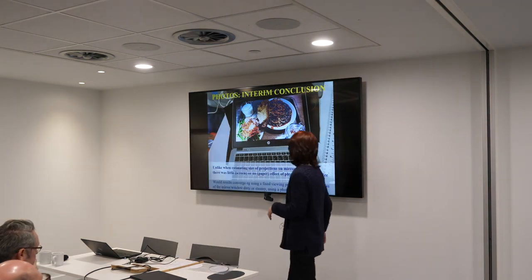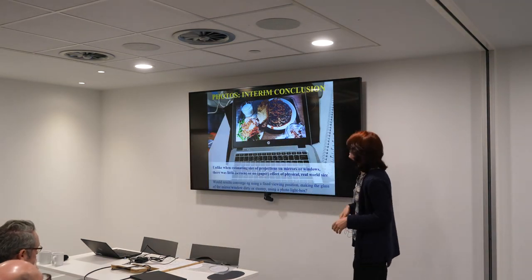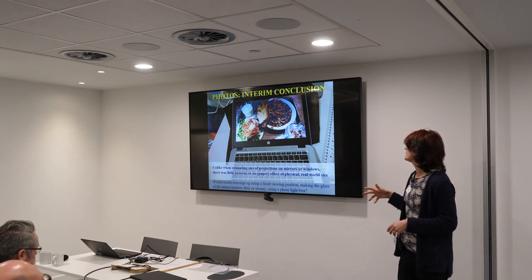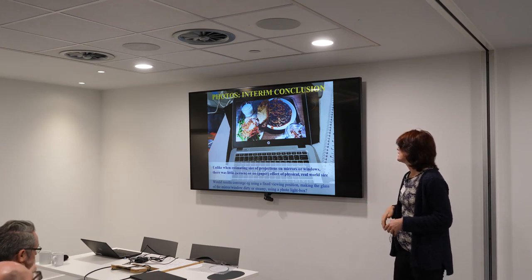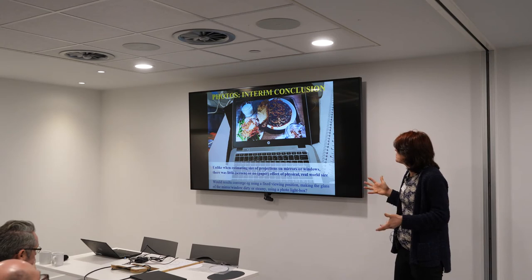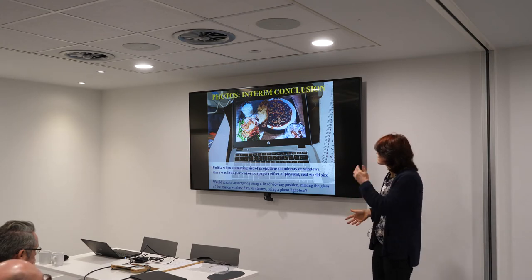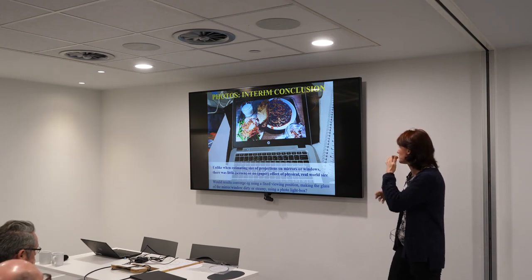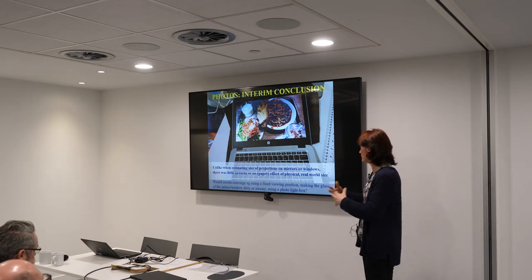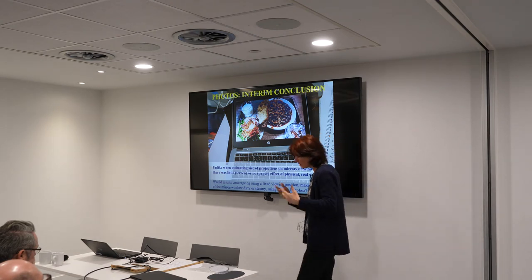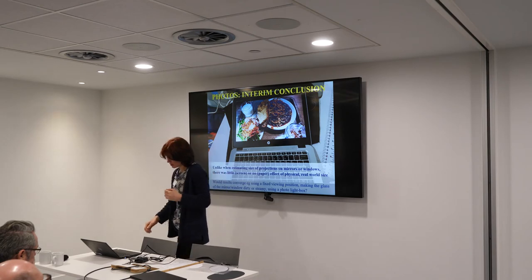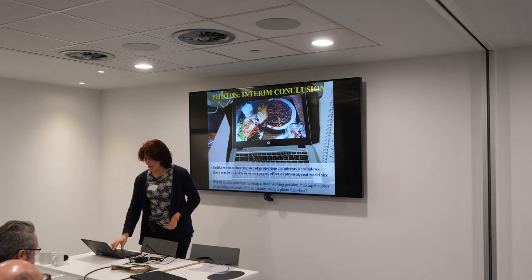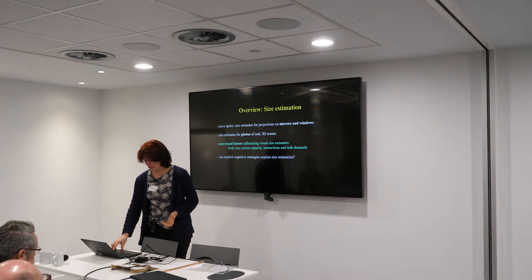As an interim conclusion, unlike when people are estimating the size of projections on mirrors or windows, there's little effect of the physical real world when estimating size in photos. Maybe we could get these results to converge by using fixed viewing positions, making the glass of a mirror or window dirty or steamy, or using a photo light box to make it more compelling. But I'm interested in why there is this difference and what it might mean.